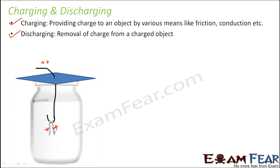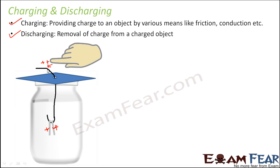Once these objects have acquired charge, how do you remove the charge from them? Instead of the charged object, if you try to touch this wire with your finger, your finger actually provides a path for these excess charges to get grounded. So the foil strips will lose these extra charges to the earth through our body.